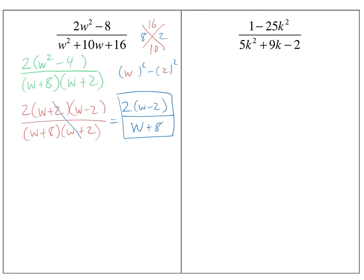I have simplified it as much as possible. If I cared about restrictions — which is good to think about — what would create a 0 in the denominator? What would make (W + 8) equal 0? Negative 8. What would make (W + 2) equal 0? Negative 2. So my restrictions would be W ≠ -8 and W ≠ -2, just to practice. It doesn't ask for restrictions, but I just thought I'd quickly check that.